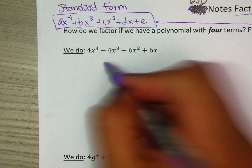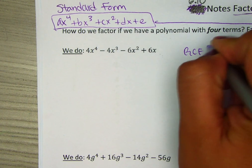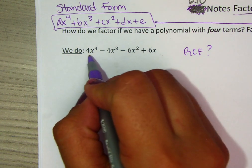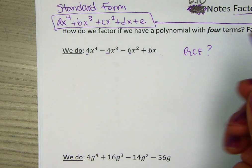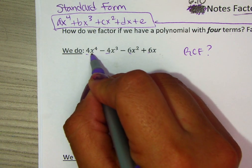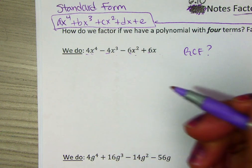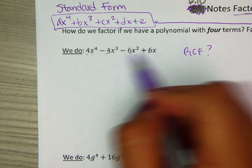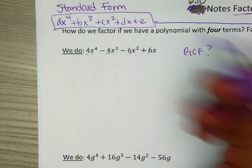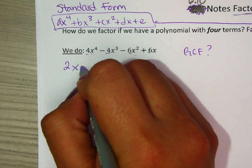Let's try this first example. You want to start by asking yourself, is there a GCF that you can factor out or divide each term by? Look at the numbers 4, 4, 6, and 6 - they can all be divided by 2. Then look at the variables. If they all have at least an x, you can take out an x. Our GCF in this case will be 2x.